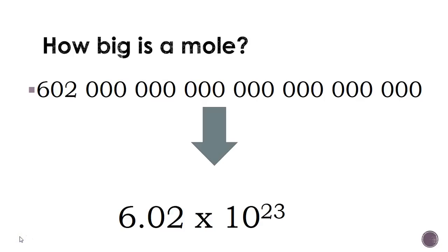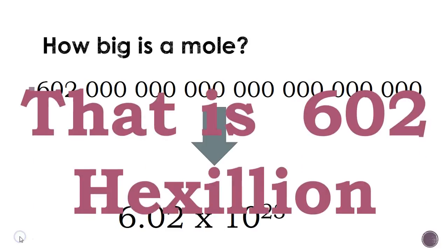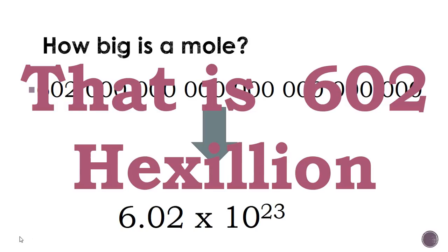How big is a mole? A mole is 602,000,000,000,000,000,000,000 — all these zeros. Ultimately, when you change this to scientific notation, it is 6.02 times 10 to the 23rd.